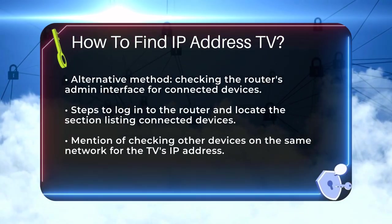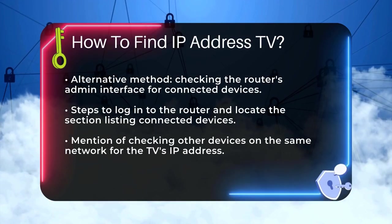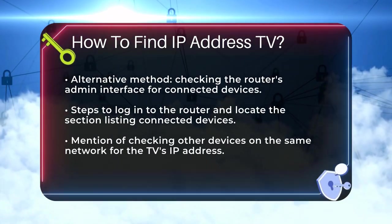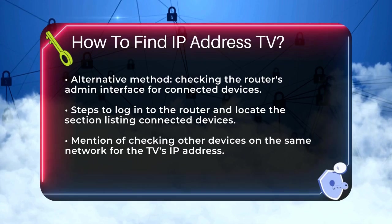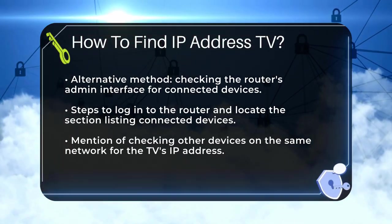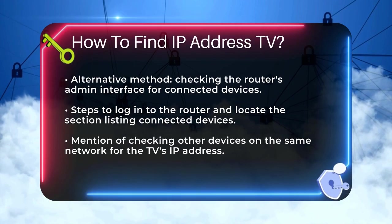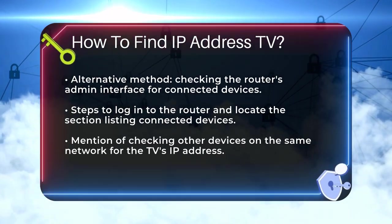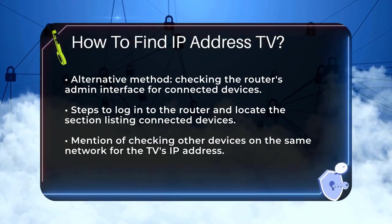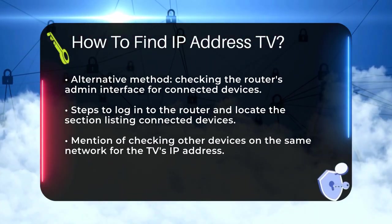If you have other devices connected to the same network as your TV, such as a computer or smartphone, you can check their network settings to find the TV's IP address. On a smartphone, for example, go to the Settings app, select the Wi-Fi option, and then tap the icon labeled "I" next to the connected Wi-Fi network. Here you might find the IP address of your TV listed among the connected devices.